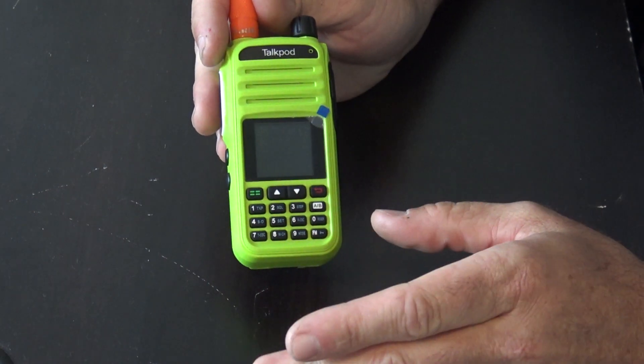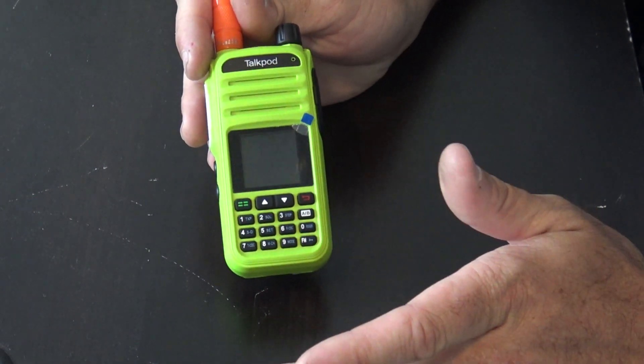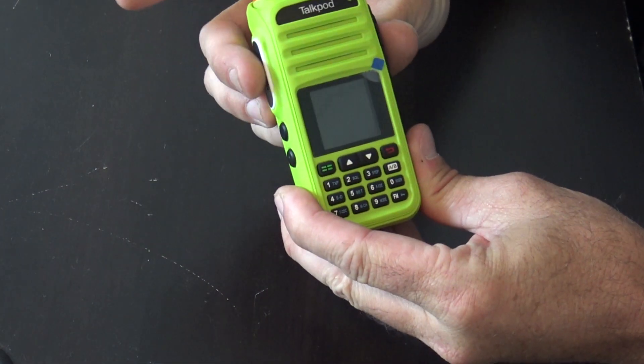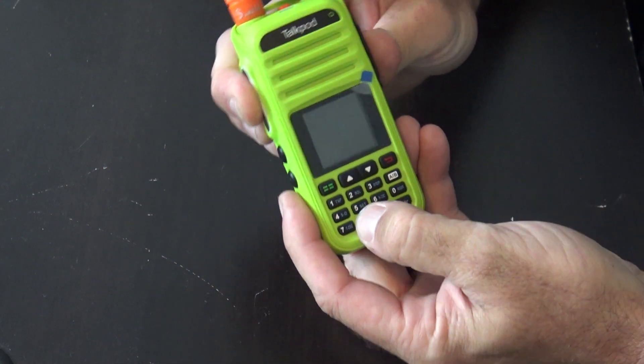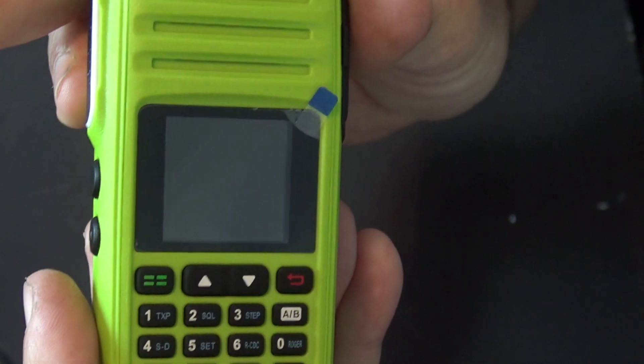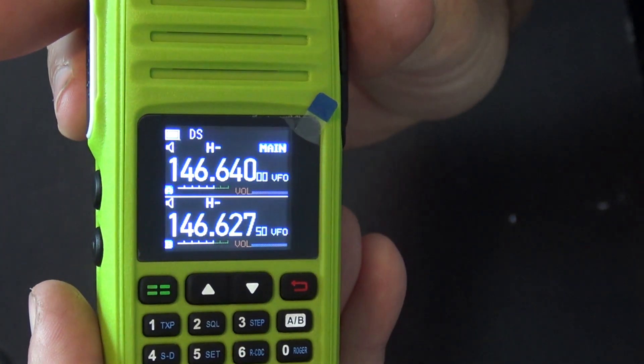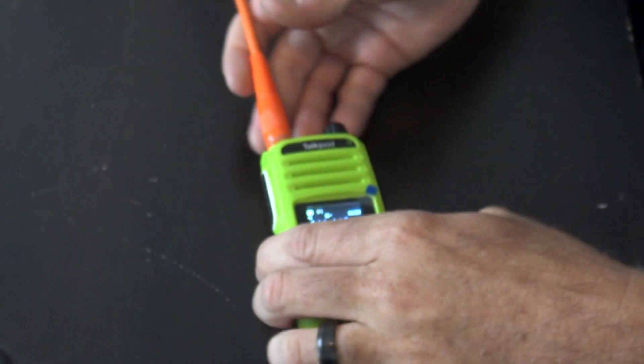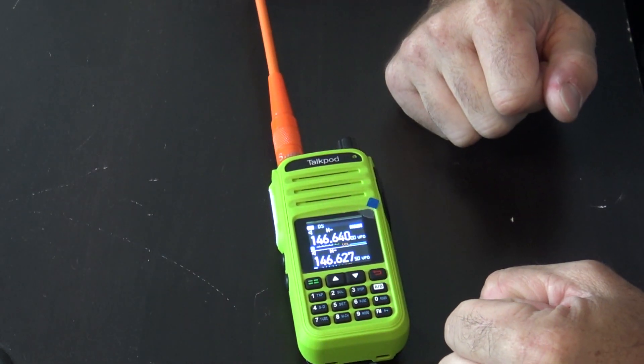This is marketed as a GMRS handheld. Now if you want to make this be able to transmit in ham radio, hold the PTT button, hold the number 8, turn it on. You're going to see the word expand. Let go.